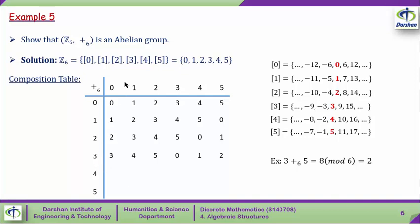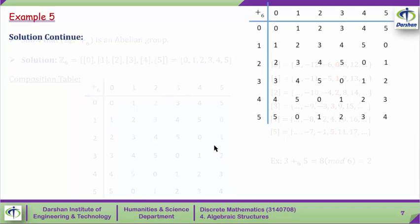Continuing the table: 3+0=3, 3+1=4, 3+2=5, 3+3=6 which is in class [0] so we write 0, 3+4=7 which is in class [1], 3+5=8 which is in class [2]. Similarly the remaining rows are [4,5,0,1,2,3] and [5,0,1,2,3,4]. This completes the composition table.